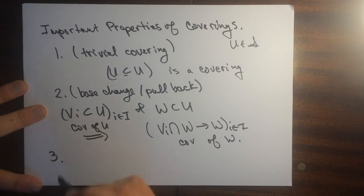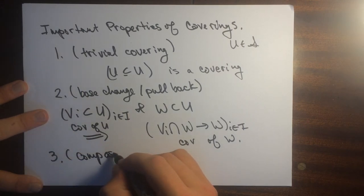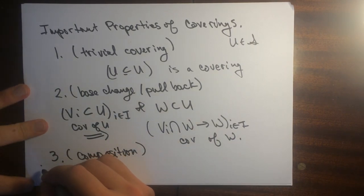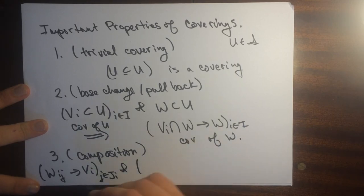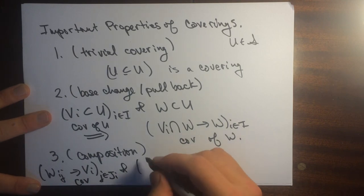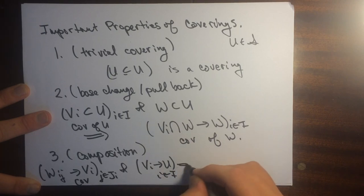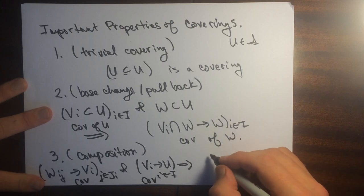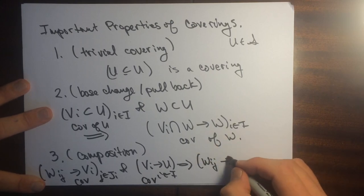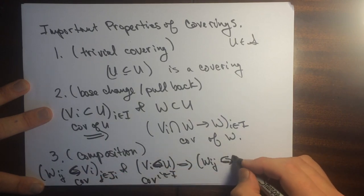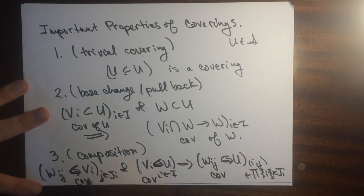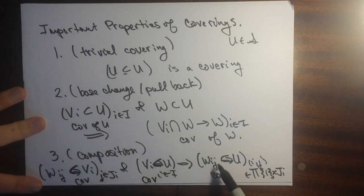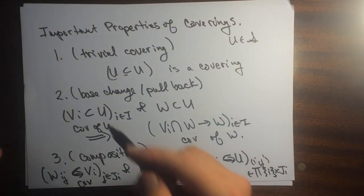The third property is about composition. It says that if we have one covering of these Vi's, let's say for j in j sub i, and this is a covering. And then we have another covering, these Vi's cover some other guy U for i in I. Then this tells us that the collection here of Wij, and we run over all the i's and j's. This is in something like the product of I cross Ji. So all the possible i's and j's, this is also a covering. So if we cover the covering, then the things that cover the covering are going to be a cover themselves. And these are the important properties. This was figured out by Grothendieck.